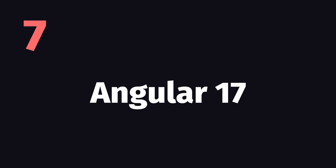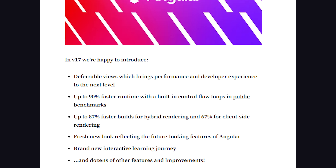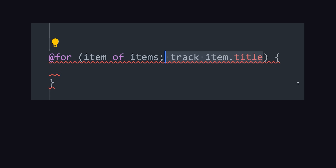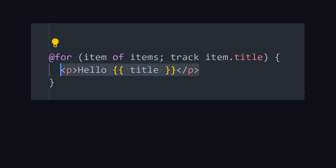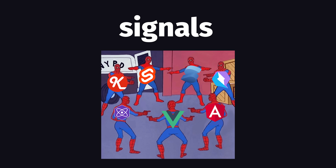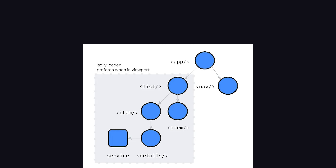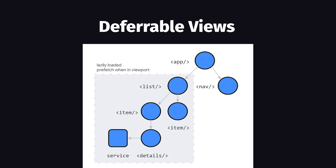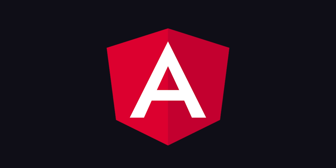The award for the most changed framework in 2023 goes to Angular. It has a long list of new features, but the most notable for Angular haters would be the new template syntax, which provides a cleaner way to handle conditionals and loops, replacing things like ngIf and ngFor. In addition, Angular has adopted signals, much like all the other frameworks, and brings a new feature called deferrable views, which enables declarative lazy loading directly in a template.